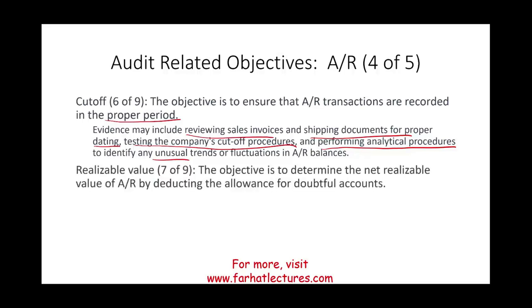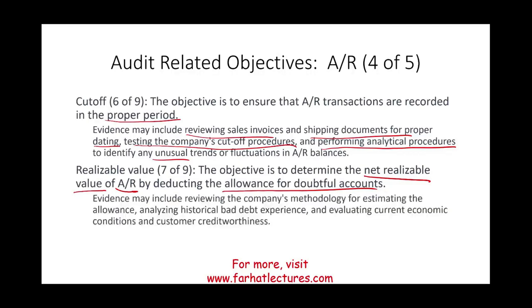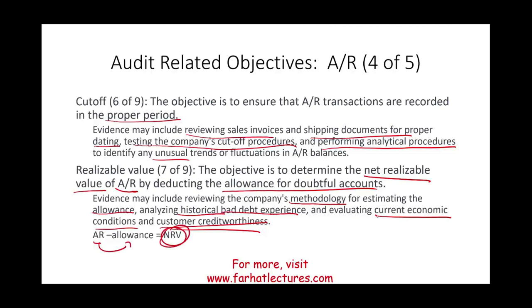Realizable value deals with the allowance. The objective is to determine the net realizable value — how much we're actually going to collect from account receivable. We take AR minus the allowance to get NRV. To determine this amount, you review the company's methods for estimating the allowance: looking at historical data and prior-year bad debt experience, evaluating current economic conditions — if conditions are deteriorating, fewer people will pay — and assessing the credit worthiness of customers. Companies are increasingly using big data to analyze customer credit, especially credit card companies. Each company is different, but these are the key techniques.